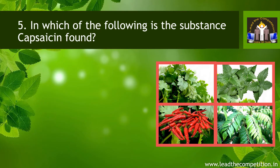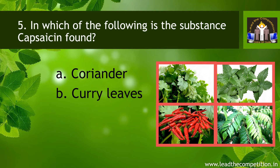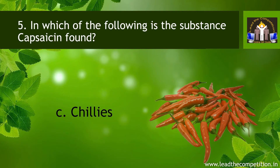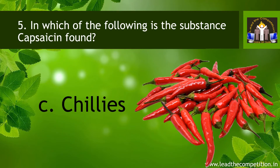Question number 5. In which of the following is the substance capsaicin found? A. Coriander. B. Curry leaves. C. Chilies. D. Mint. The answer is C. Chilies.